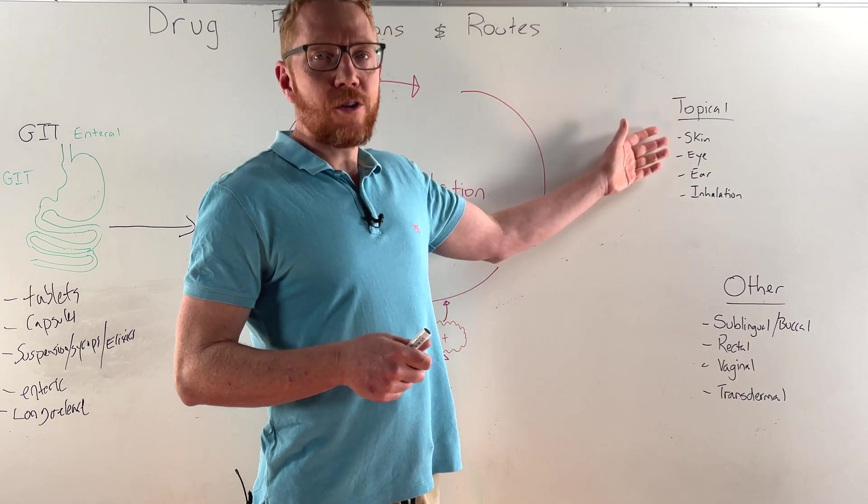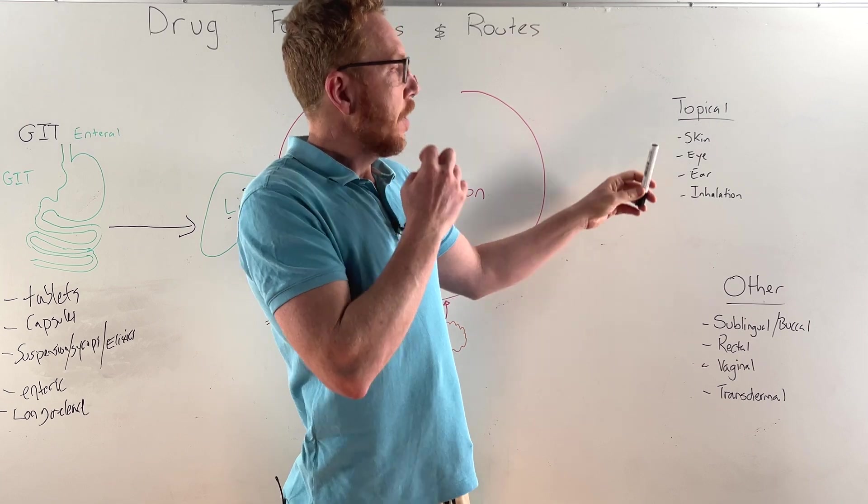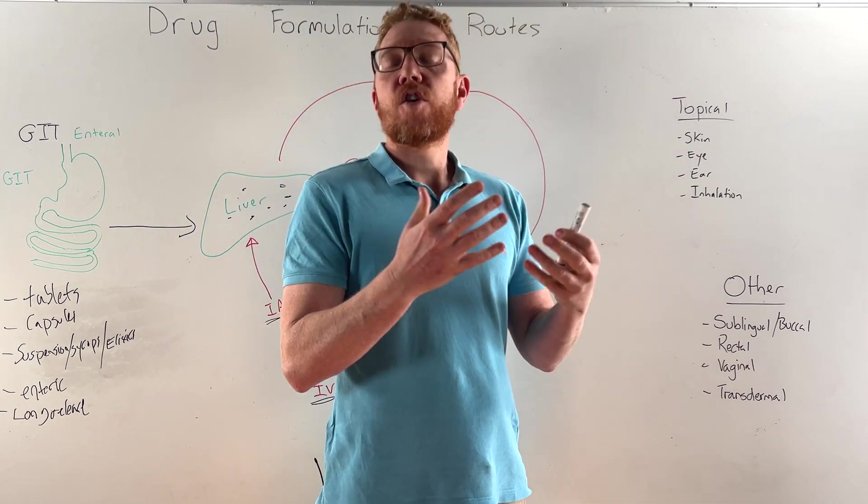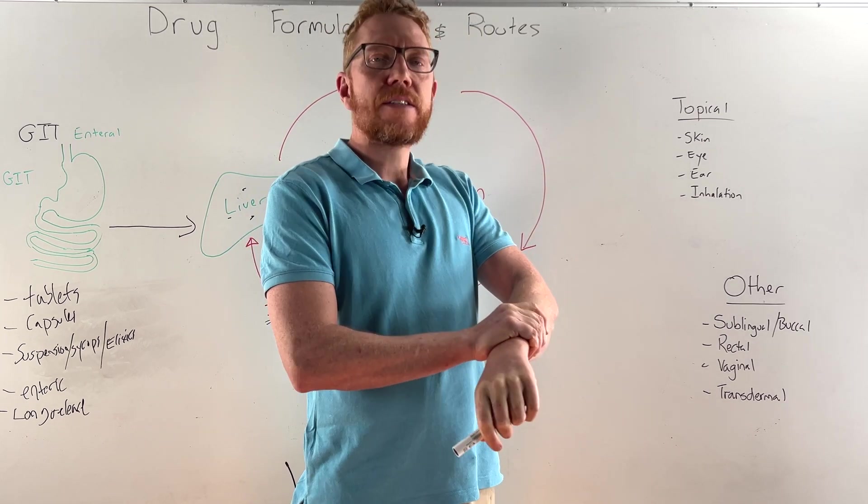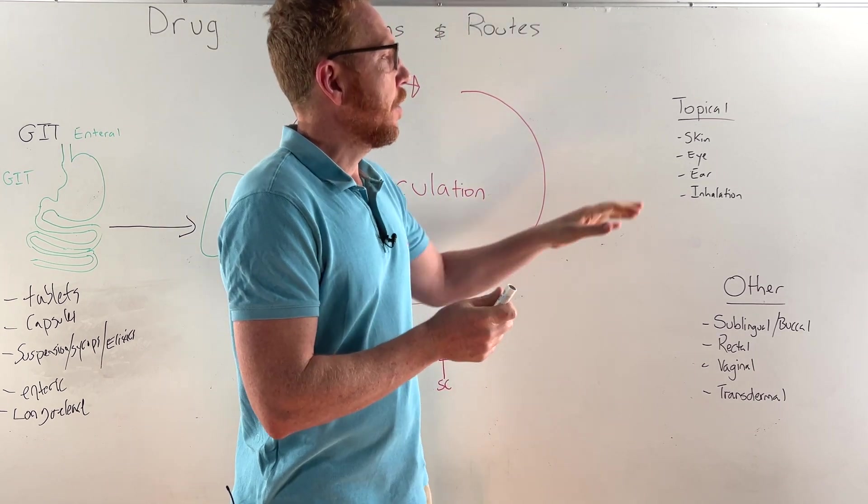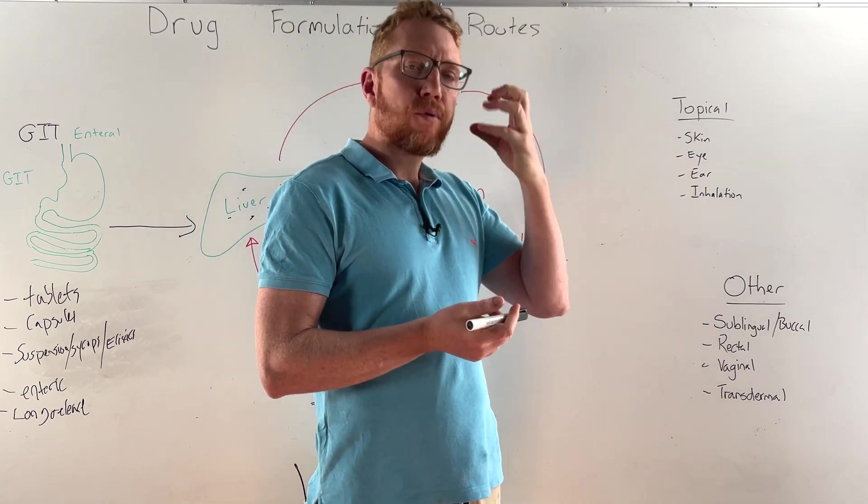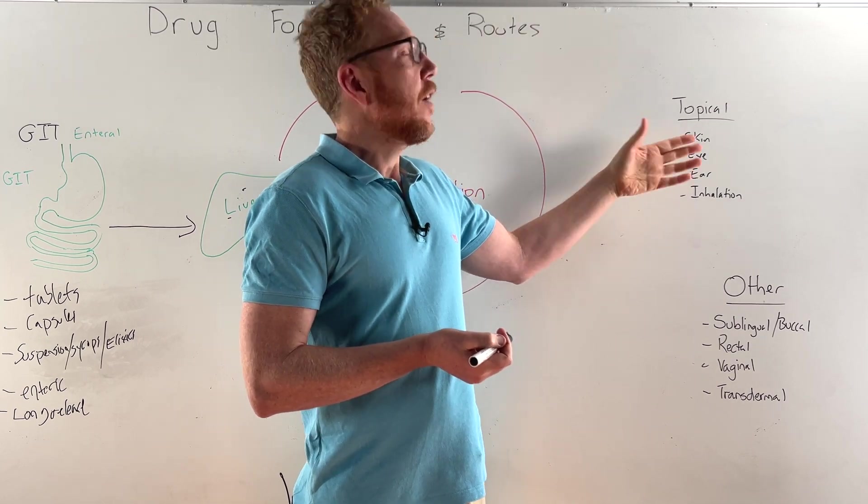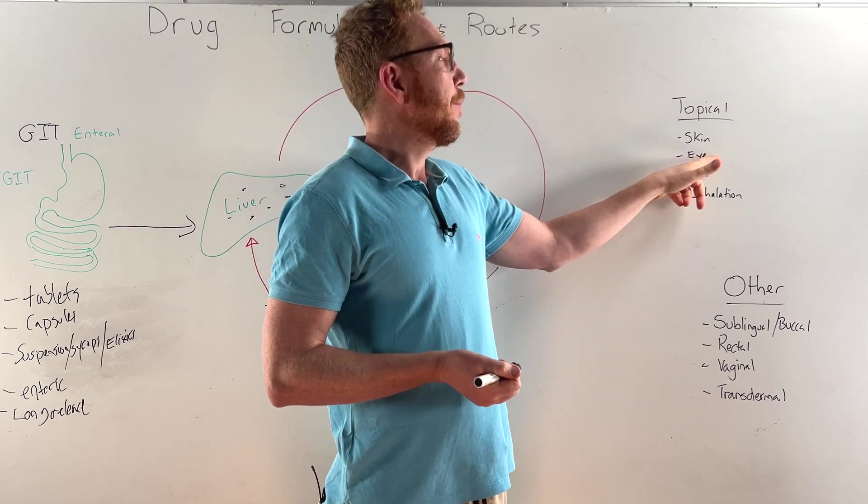Moving to topical routes of administration - we've got skin, the eye, the ear, inhalation. For skin, this is a topical applied solution as a cream, could be a steroid. If the person has dermatitis they might put hydrocortisone onto their skin and little would be absorbed into the circulation, so that has good advantages - it's locally applied. For the eye, if the patient has high pressure in their eye known as glaucoma, applying the drug locally would have less side effects compared to if we go systemically. Certain medications can be given as drops and applied there.